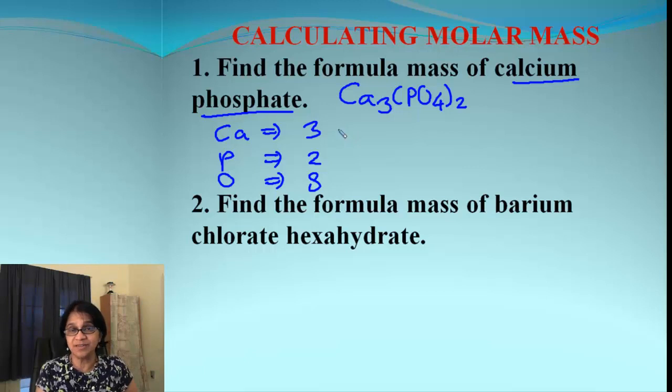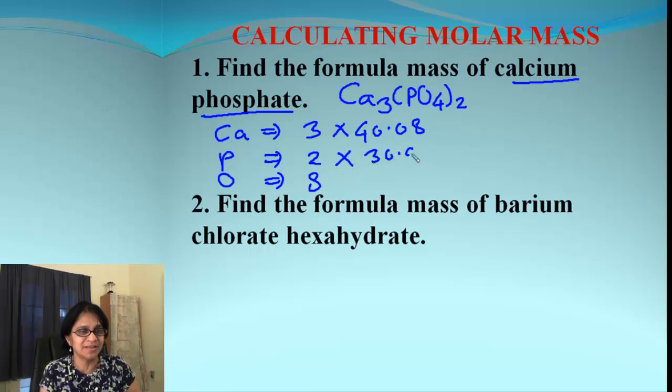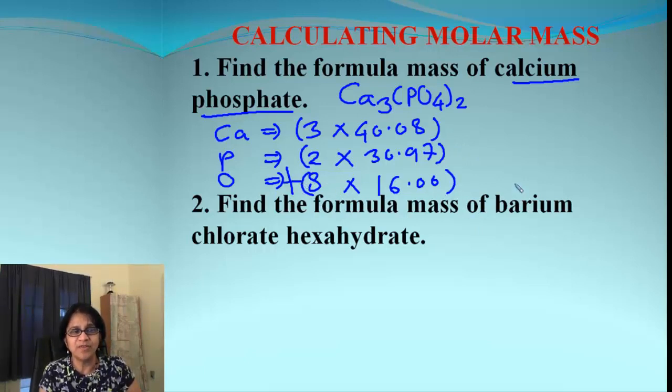So we are going to find out the atomic masses for each of the atoms. Calcium's atomic mass is 40.08 from the periodic table, phosphorus is 30.97, and oxygen is 16.00. We are going to multiply each of these and then simply add. When we add all that, what we get is the molar mass, which in this case is 310.18, and the unit for that is atomic mass unit, or we call it amu.